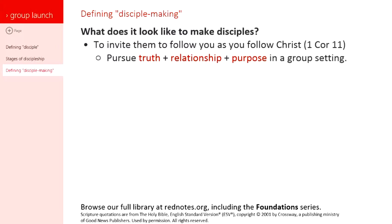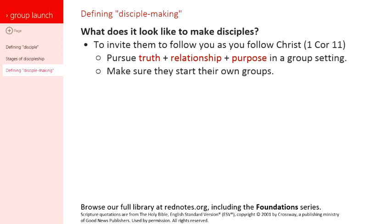What we're doing is first and foremost pursuing truth, relationship, and purpose — but doing it in a group setting, doing it so others can see us. Then we're saying, you need to go start your own groups. We model a life committed to God's truth, committed to relationship with God and others, and committed to accomplishing our purpose in life — a big part of which is making disciples. Then we make sure they go out and do the same thing. The way we do it in our groups is critically important because we need to make sure it's reproducible.